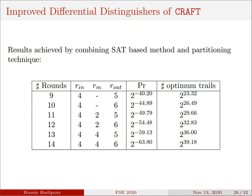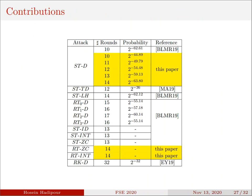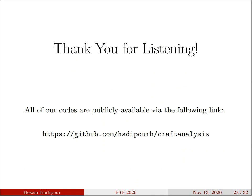That completes my presentation. Now we come to the end of this talk, where I have summarized our main results. As you can see, we improved the single-tweak differential distinguishers of CRAFT by 4 rounds, and we improved zero-correlation and integral distinguishers of CRAFT by 1 round. Before I finish, let me just say that all of our codes are publicly available via the following link. Thank you for listening.